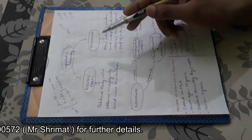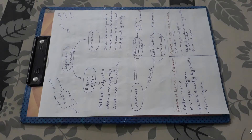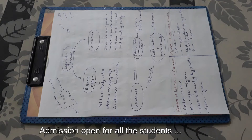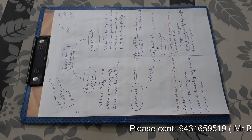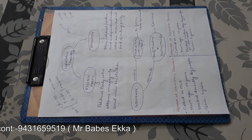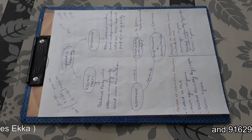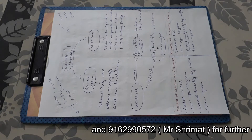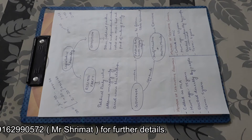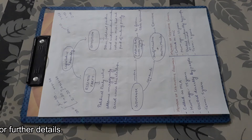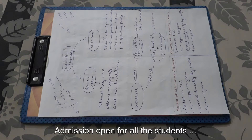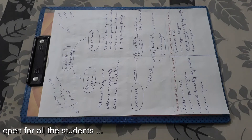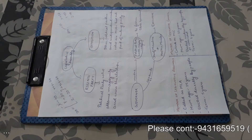So the ruling party and opposition concept: in Bihar, the ruling party is Nitish Kumar's party and the opposition is Tejashwi Yadav's party. At the central government level, the ruling party is the BJP-led Narendra Modi government, and the opposition includes Congress, NCP, etc.